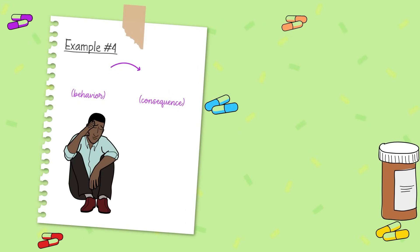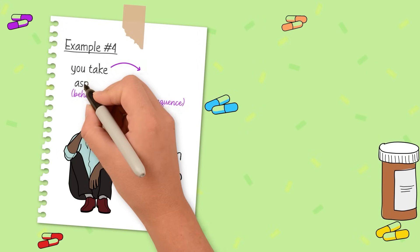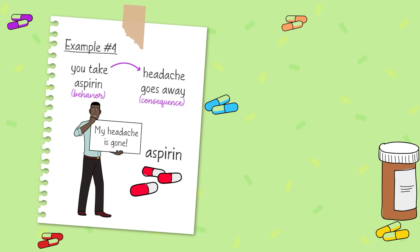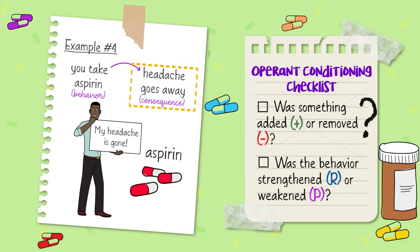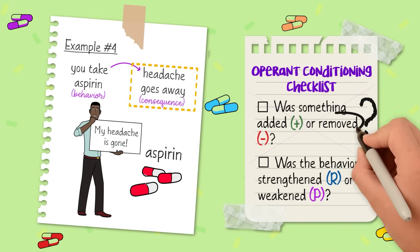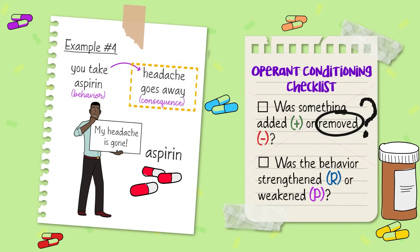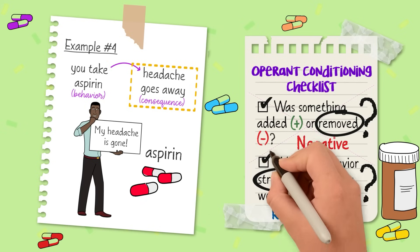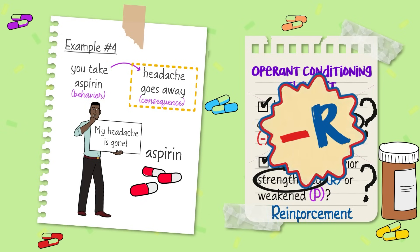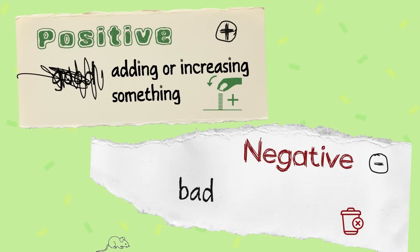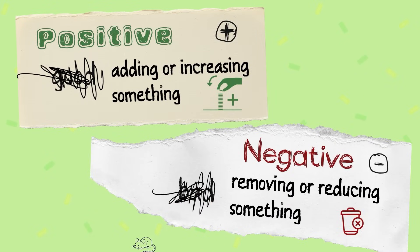For our last example, let's say you take an aspirin and your headache goes away. In the consequence, was something added or removed? Your headache was removed, so it's negative. Is the behavior strengthened or weakened? You'll want to use aspirin again the next time your head hurts, so it's strengthened — it's a reinforcement. This is an example of negative reinforcement. And again, it isn't negative because it's bad. Negative here simply means that something was removed.